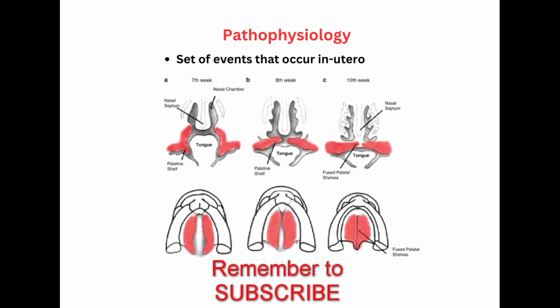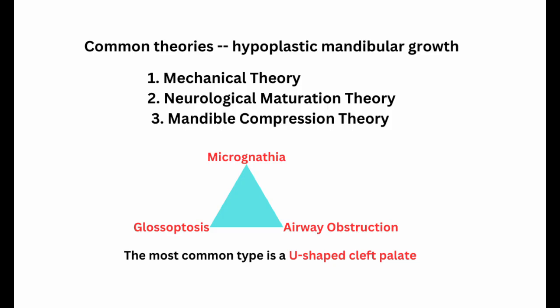As you can see in this diagram, if the tongue is not able to follow the growth of the mandible — that is, not going down — that will lead to a cleft palate as well. One theory is the mechanical theory, where the mandibular growth is abnormal and the tongue is not able to follow the normal trajectory of growth, blocking the closure of the palate and leading to a cleft.